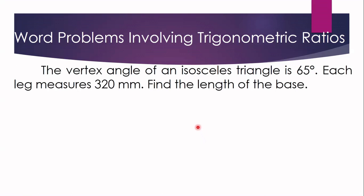Problem number one: The vertex angle of an isosceles triangle is 65 degrees. Each leg measures 320 millimeters. Find the length of the base. So the problem involves an isosceles triangle with a vertex angle of 65 degrees, each leg measuring 320 millimeters, and we need to find the length of the base.